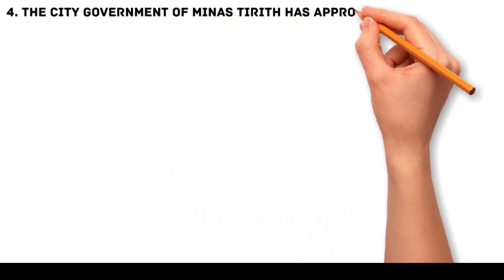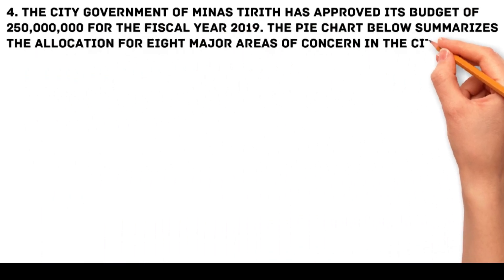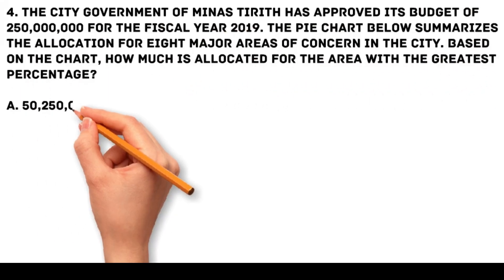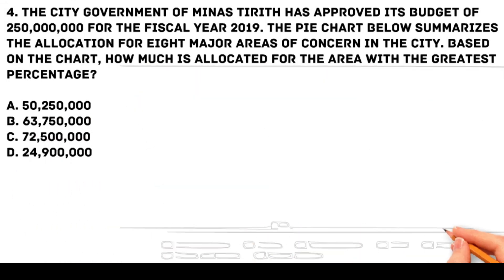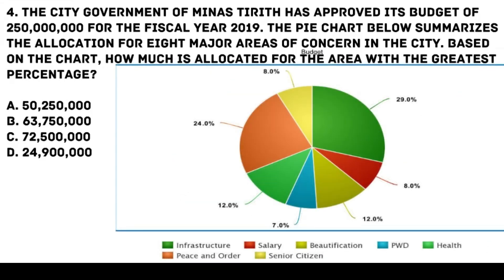Problem 4: The city government of Minas Tirith has approved its budget of 250 million pesos for the fiscal year 2019. The pie chart below summarizes the allocation for eight major areas of concern. Based on the chart, how much is allocated for the area with the greatest percentage? Options: a. 50,250,000 pesos, b. 63,750,000 pesos, c. 72,500,000 pesos, d. 24,900,000 pesos.